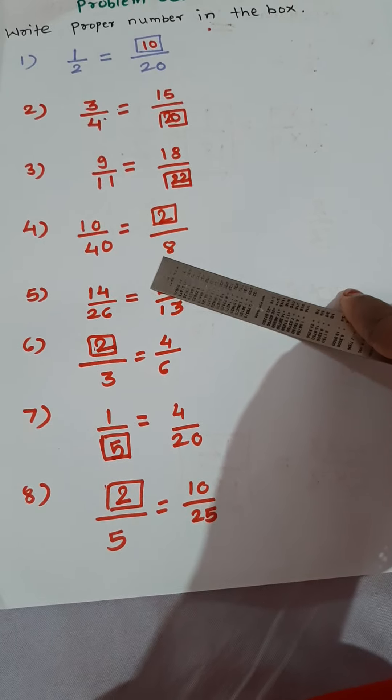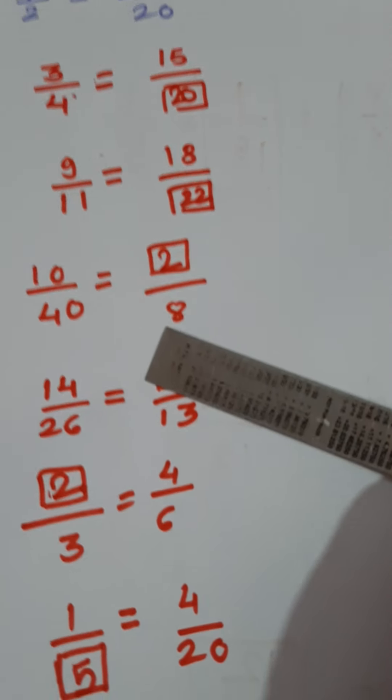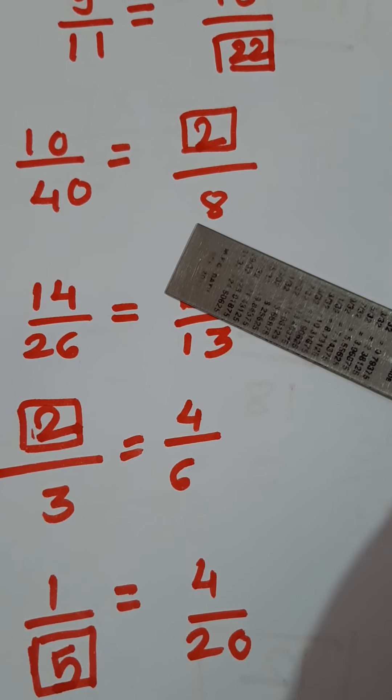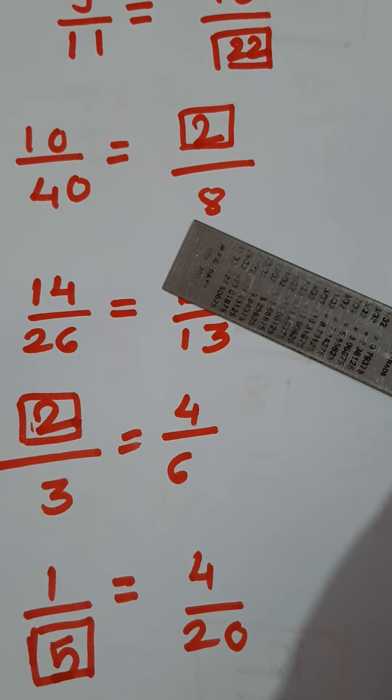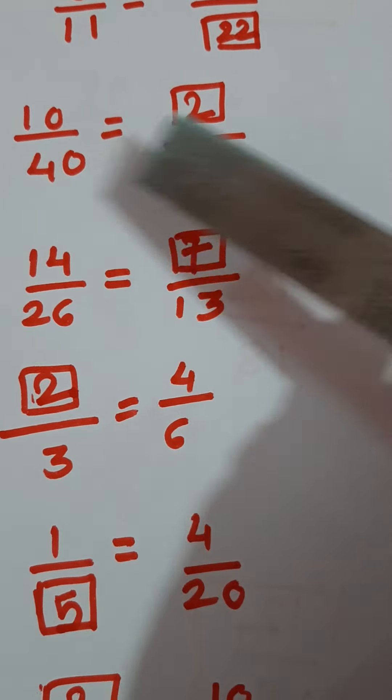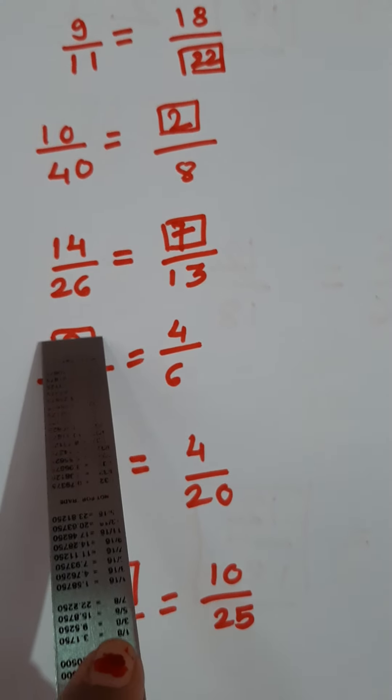Then 14 upon 26. 14 upon 26 is equal to dash upon 13. 13, 2's are 26. So how many 2's are 14? 7, 2's are 14.